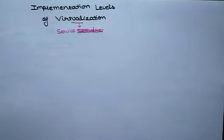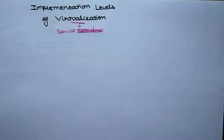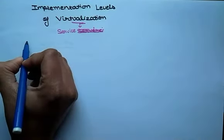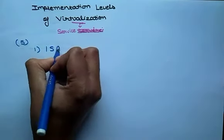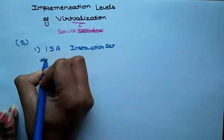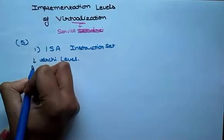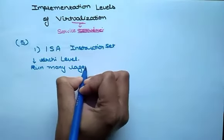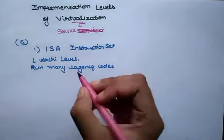Hi students, welcome to the channel. Our today's topic is implementation levels of virtualization. As we all know, virtualization means we can access any type of services with the help of cloud computing through virtualization hardware. In cloud computing, there are mainly five implementation levels of virtualization. The first level is ISA — Instruction Set Architecture level. ISA virtualization works through ISA emulation, and is used to run many legacy codes that were written for a different configuration of hardware.